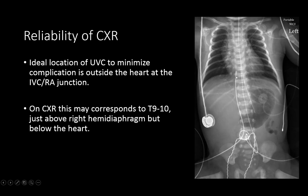On X-rays, depending on the study, the acceptable range varies from approximately T8 to T10 thoracic vertebra. The tip should be just above the right diaphragm but below the cardiac silhouette.